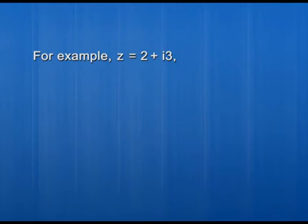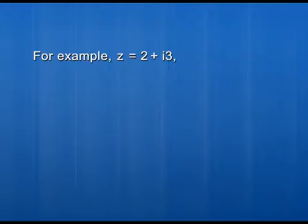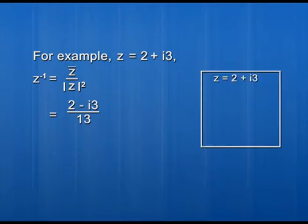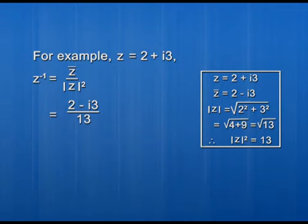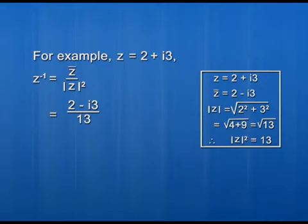For example, if z equals 2 plus i3 and we need to find z inverse, we use the formula: z inverse equals conjugate of z upon the square of the modulus of z. The conjugate of z is 2 minus i3, and the modulus of z is the square root of 2 squared plus 3 squared, which equals the square root of 13. So the modulus squared is 13. Therefore, z inverse equals (2 minus i3) upon 13.